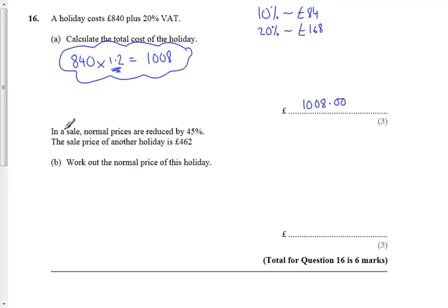This question here says in the sale normal prices are reduced by 45%. The sale price of another holiday is £462. So, it means that after it's been reduced, it started off at some price which we want to work out. It's gone down by 45%. So, 55% of the original amount is the £462.